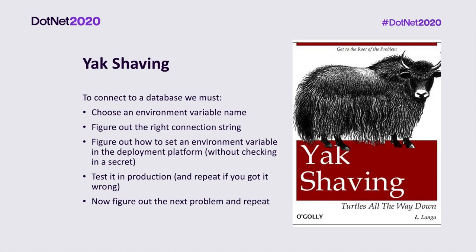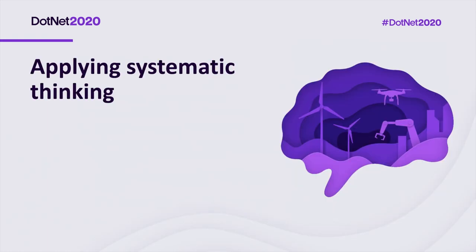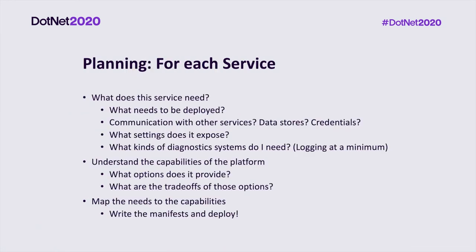In English, we have this lovely term called yak shaving — it basically refers to solving a series of small problems to accomplish a big task. Without a framework to think about putting an application in production, you cannot predict the set of small problems you'll have to solve. So to solve this, let's be systematic. We'll do three steps: think about the needs of the application, understand the options that the deployment environment provides, and then map those needs to the best options.